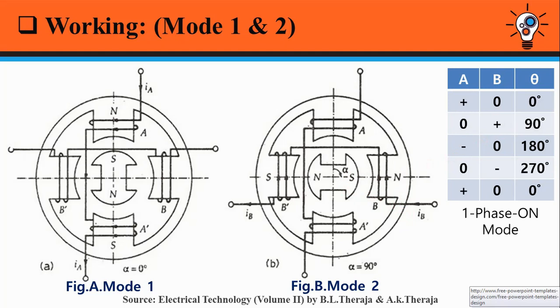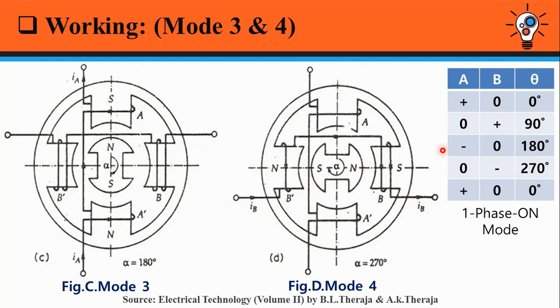Now we will move towards mode 3 and mode 4. During mode 3, phase A is excited with negative IA current and phase B is not excited.